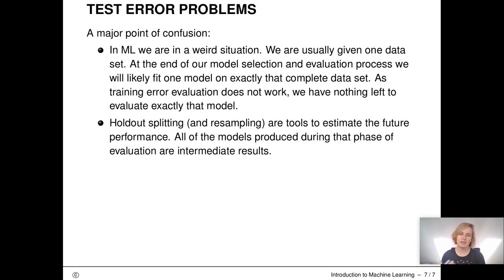In machine learning we are in a pretty weird situation. We are usually given only one data set. At the end of our model selection and evaluation process we will likely fit one model to exactly that complete data set. As training error evaluation does not work, we have nothing left to evaluate exactly that model. Holdout splitting and resampling are tools to estimate the future performance. All of the models produced during that phase of evaluation are intermediate results. Keep that in mind now and it will help avoid confusion when we move on to related concepts like cross-validation and bootstrap.